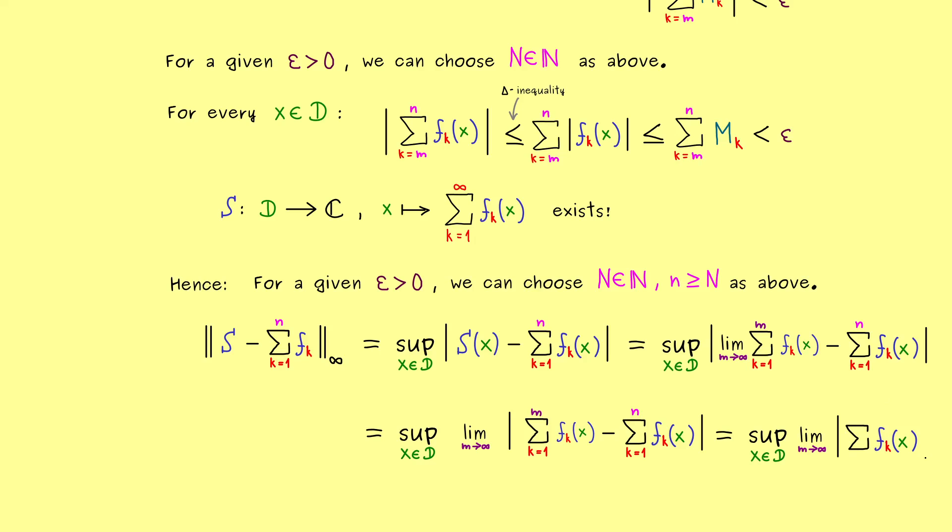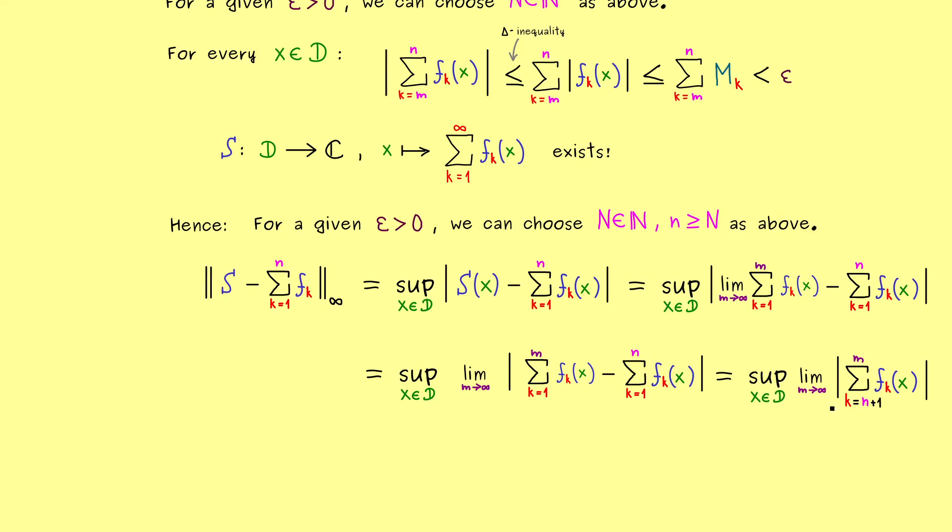However, maybe it's not clear how to write this sum, because we don't know if m or n is bigger. But obviously in the case that m is bigger than n, we would say that k goes from n plus 1 to m. And of course, in the second case, we would just write it the other way around. It does not change so much, because we know for both cases, if n and m are bigger than the capital N, then this whole sum is less than epsilon. This is simply the Cauchy criterion we have at every point x.